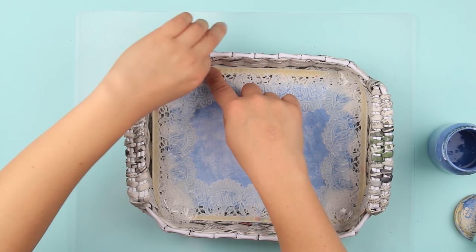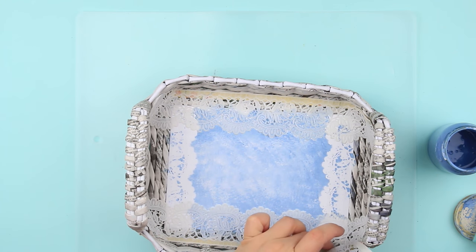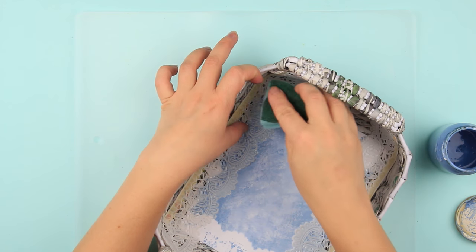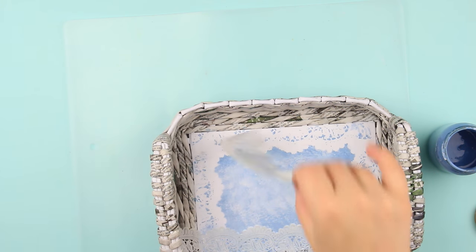When dry, remove the stencil from the two opposite sides. Add some paint to the corners. Take off the rest of the stencils.